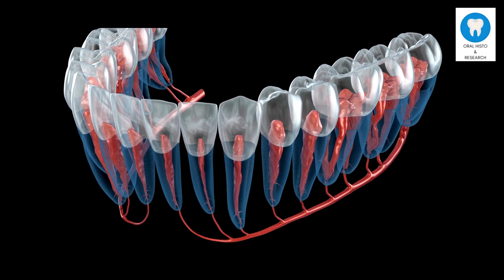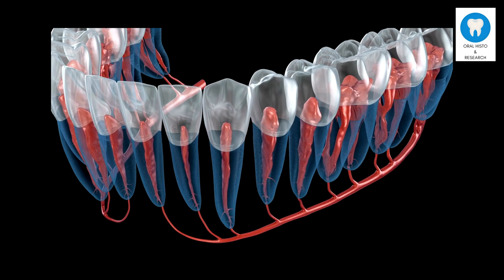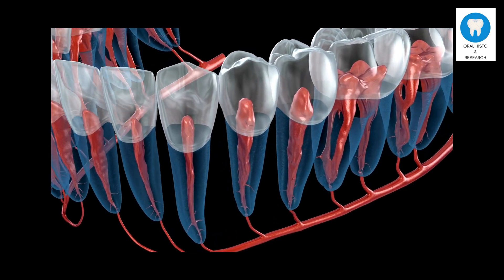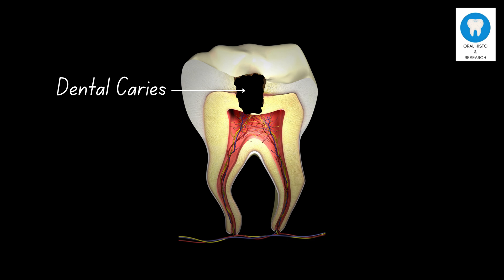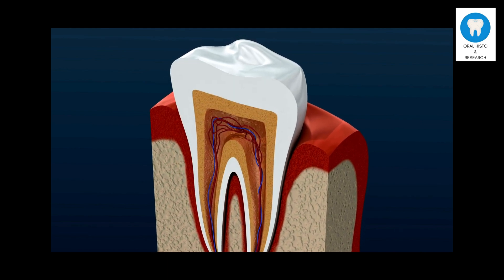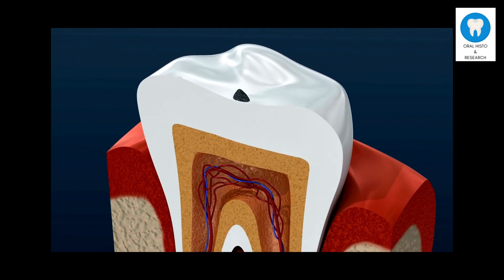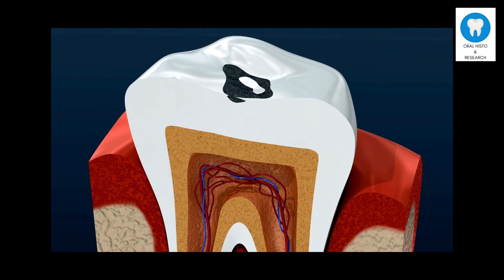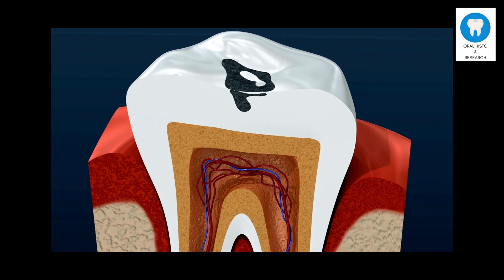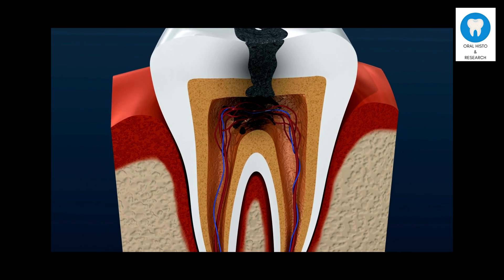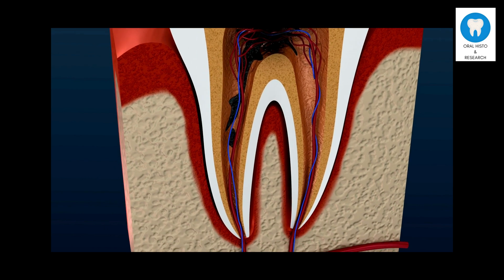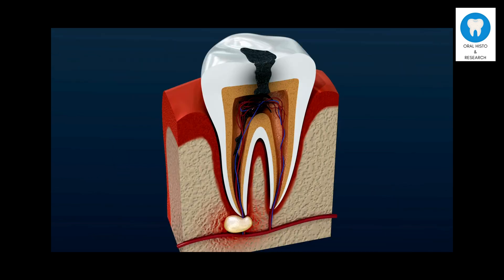The dental pulp also supplies nutrients to the tooth and can respond to infections and injuries by generating reparative dentin. Dental caries, commonly known as tooth decay or cavities, is a condition characterized by the destruction of the tooth's hard tissues — namely the enamel, dentin, and cementum — however it can also reach the dental pulp, causing infection, inflammation, and severe pain.